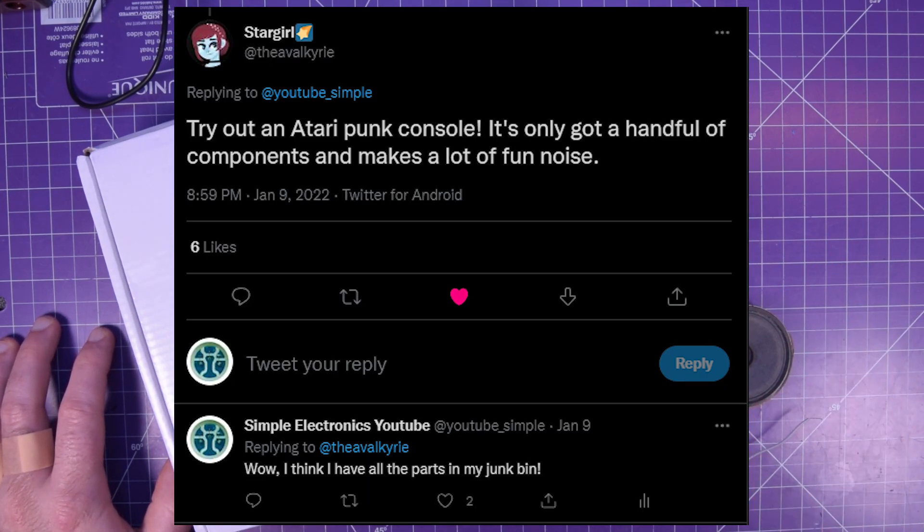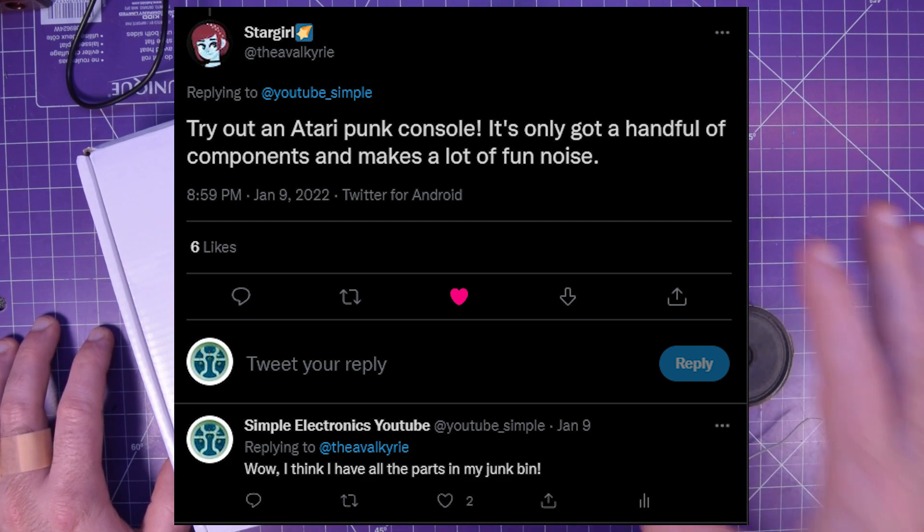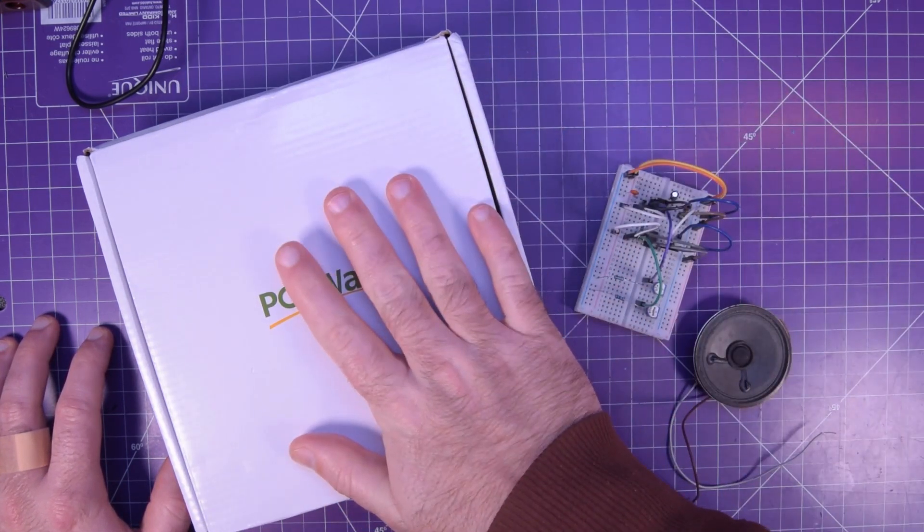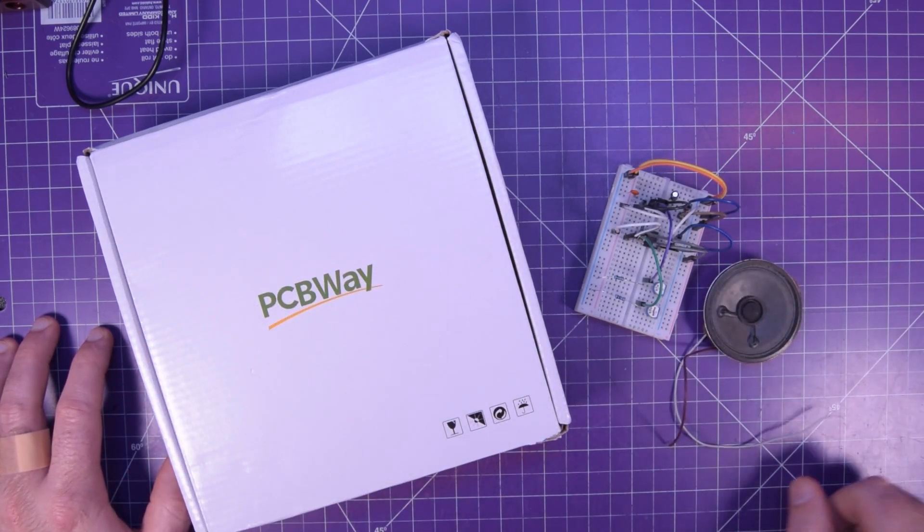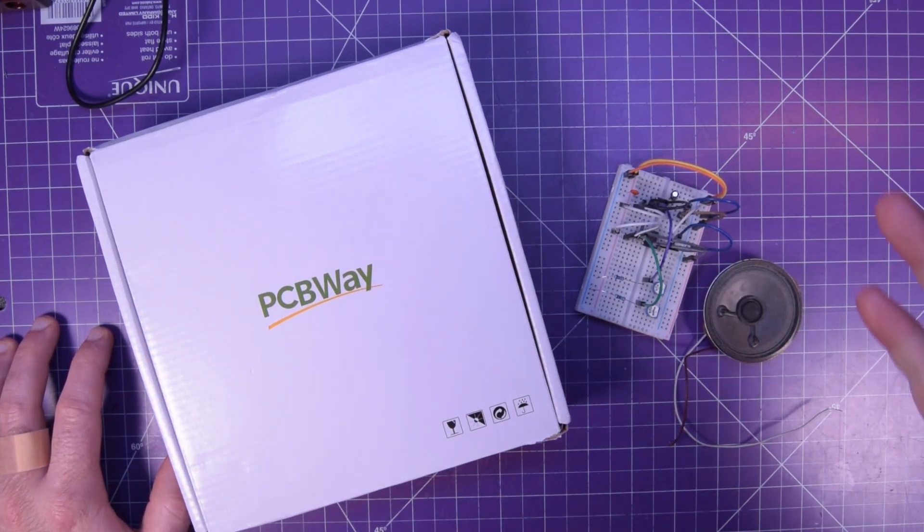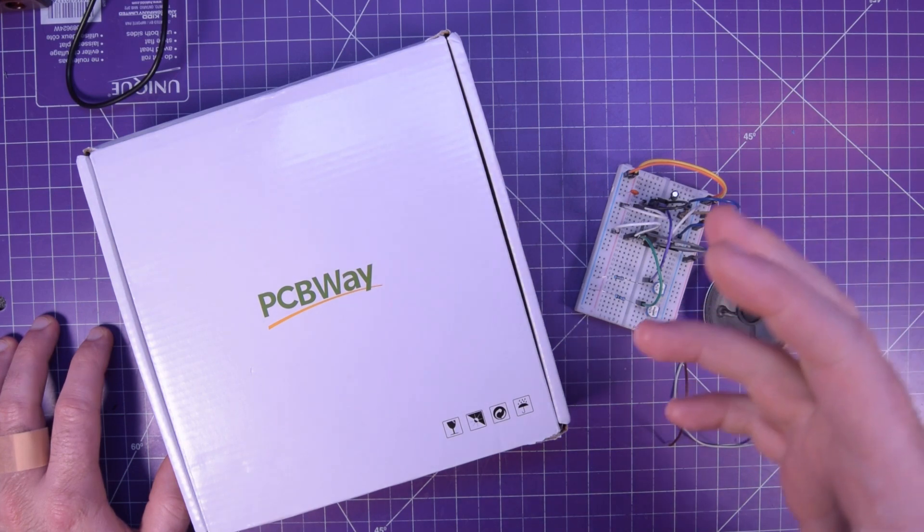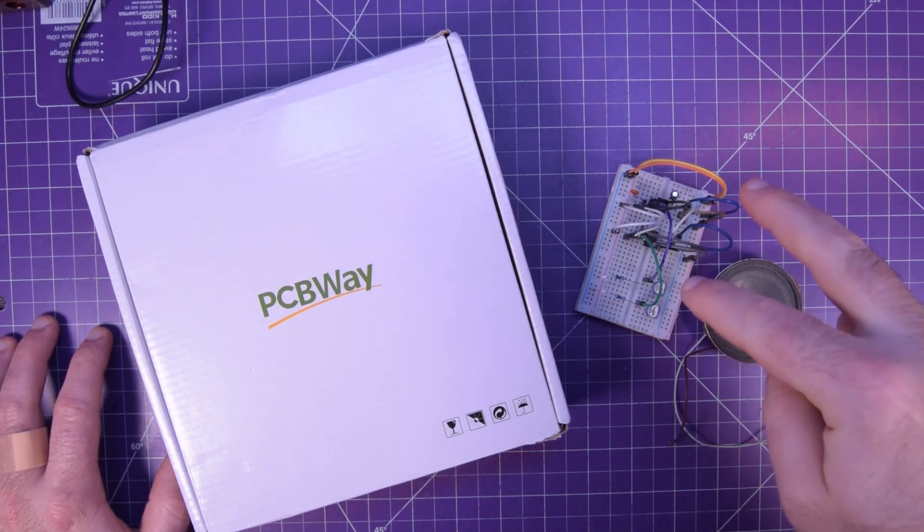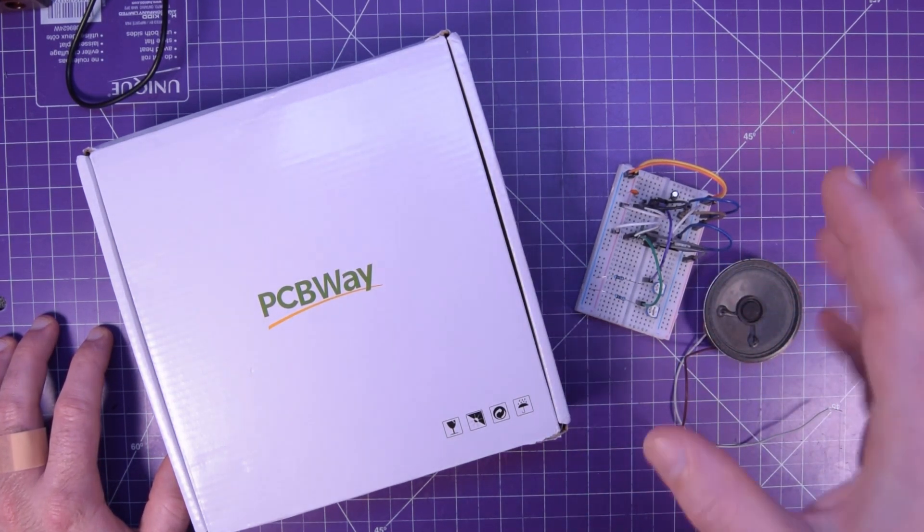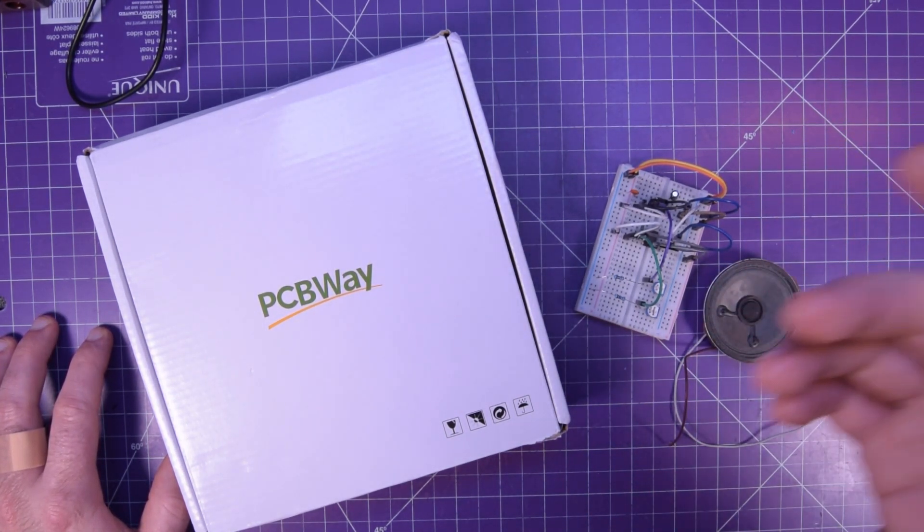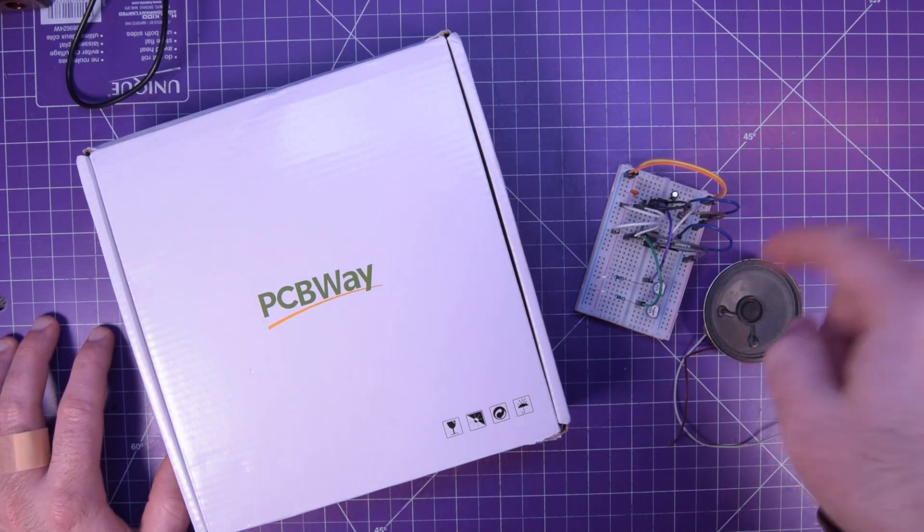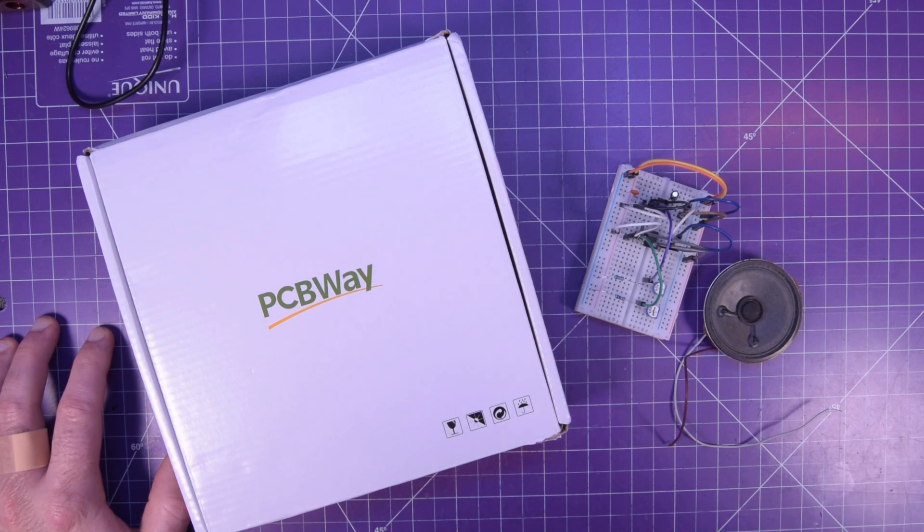And she suggested I try the Atari Punk console. So that's what these things are here. I've got it breadboarded, and I've got it on a circuit board from PCBWay. I had to do a little research, and when I took a look at the circuit, it's basically two 555 timers, which you guys should have in stock, and if not, they're very inexpensive, or one 556 timer, which is basically two 555 timers together.